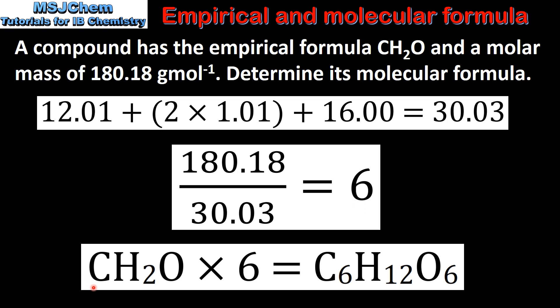The final step is to multiply all the atoms in the empirical formula by the number that we've just calculated. This gives us a molecular formula of C6H12O6 which is glucose.